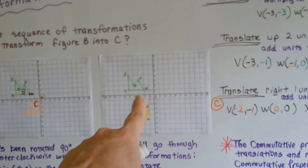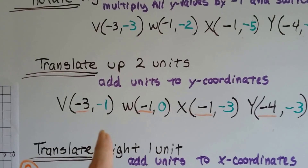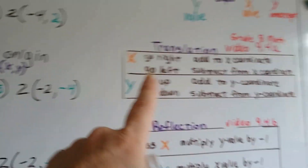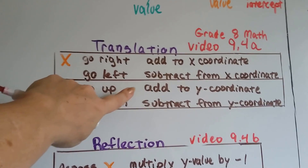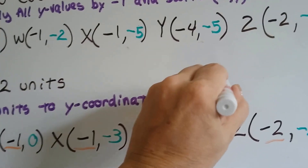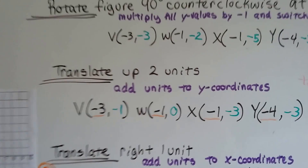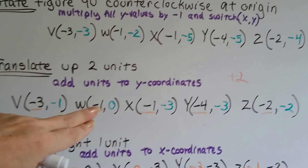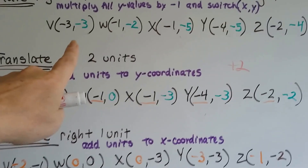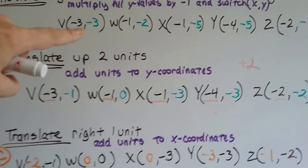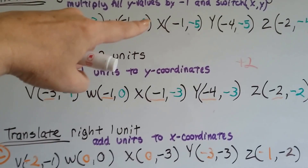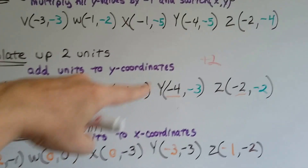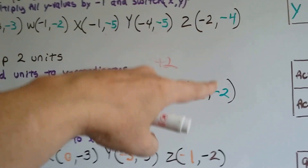Now we've got it rotated into position. We need to translate it up two units. The rule to translate up two units is we add units to the y-coordinates — if we're going up, we add to the y-coordinates that many units. So we're going to add two to all the y-coordinates based on the rotated figure. Negative three plus two is negative one. Negative two plus two is zero. Negative five plus two is negative three. Negative five plus two is negative three. Negative four plus two is negative two.